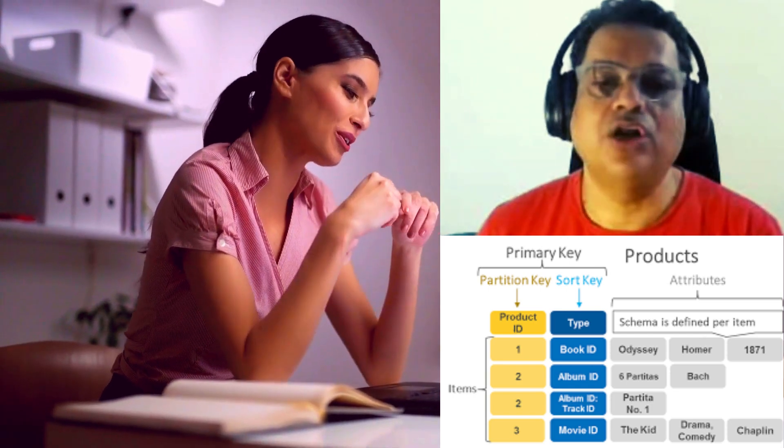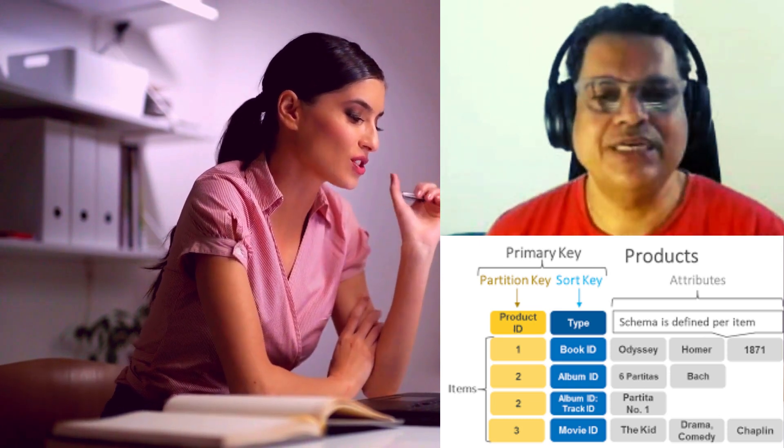The next part is called sort key, sometimes referred to as range key. Sort key or range key are interchangeable words. The sort key allows sequences of items to be efficiently queried, such as all items with the same partition key sorted by the sort key value. When used in combination with partition key, this forms a composite primary key, allowing for much more intricate query patterns.